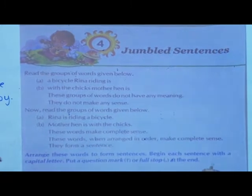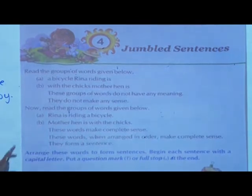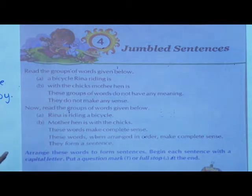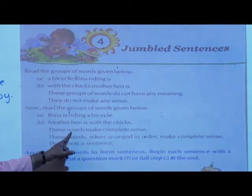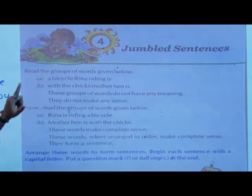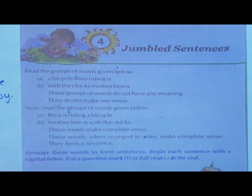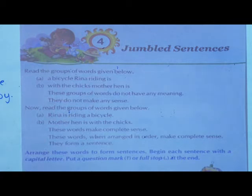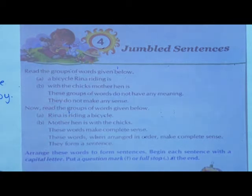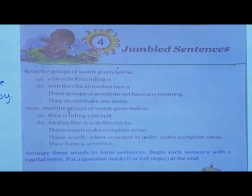Now read the groups of words given below: 'Rena is riding a bicycle.' / 'Mother wipes hands with the cheeks.' These two sentences are in serial order — they are systematic. We have corrected the jumble sentences into systematic sentences. These words make complete sense. When arranged in order, they form a sentence. So arrange these words to form sentences, begin each sentence with a capital letter, and put a question mark or full stop at the end.